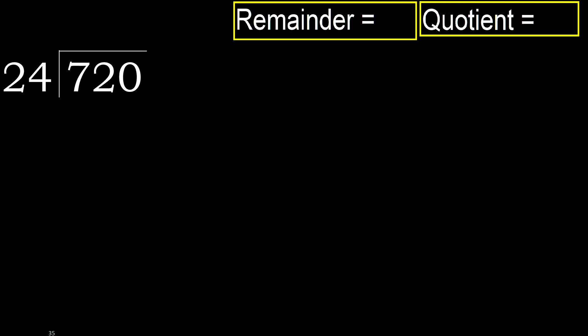720 divided by 24. 7 is less, therefore next. 72 is not less, therefore work with 72.